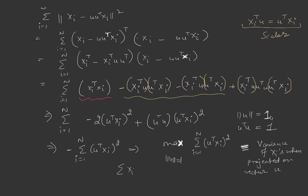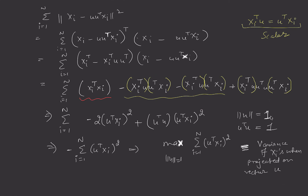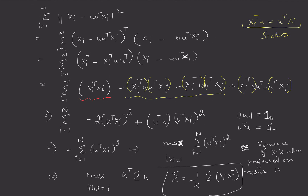This reduces to the same case discussed in the previous video: maximizing u^T*Σ*u such that the magnitude of u is 1, where Σ = (1/n) Σ(i=1 to n) xi*xi^T. Note that the first sigma here is a summation symbol while the bold Σ represents the covariance matrix. So by following the same steps as the previous video, minimizing reconstruction error leads to the same formulation.